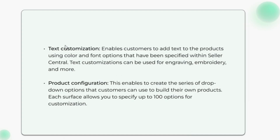The four types of customization on Amazon are: text customization, which enables customers to add text to products using color and font options specified within Seller Central. Text customizations can be used for engraving, embroidery, and more.